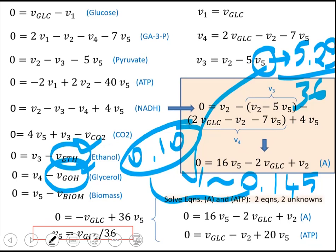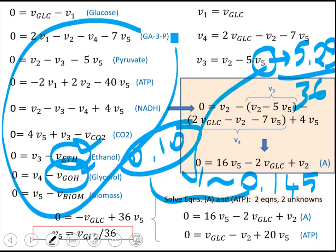By using the mass balancing approach, a biomass equation, and only the measured rate of glucose consumption, we can predict the growth rate, ethanol production rate, glycerol production rate, and the rates of all other intracellular reactions in this system. This is the power of metabolic flux analysis — the flux-based steady-state mass balancing approach.